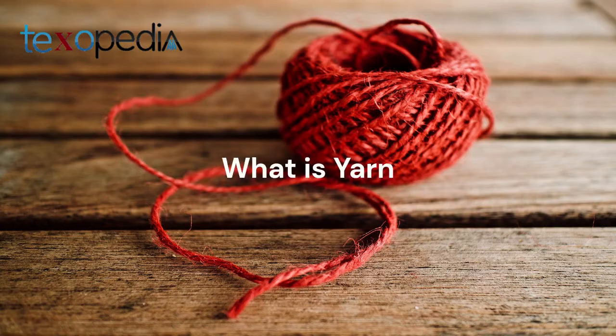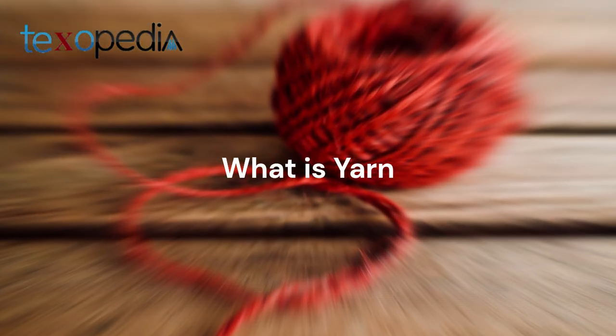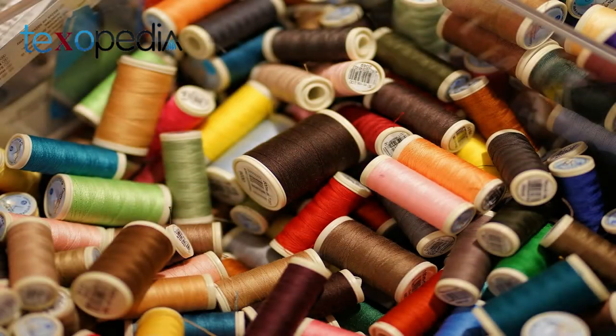What is yarn? Yarn is made by twisting together fibers, either staple or filament, to create a long, continuous strand that can be used to make fabrics, clothing, and other products. Yarn can be made from a variety of fibers, including wool, cotton, silk, and synthetic materials.